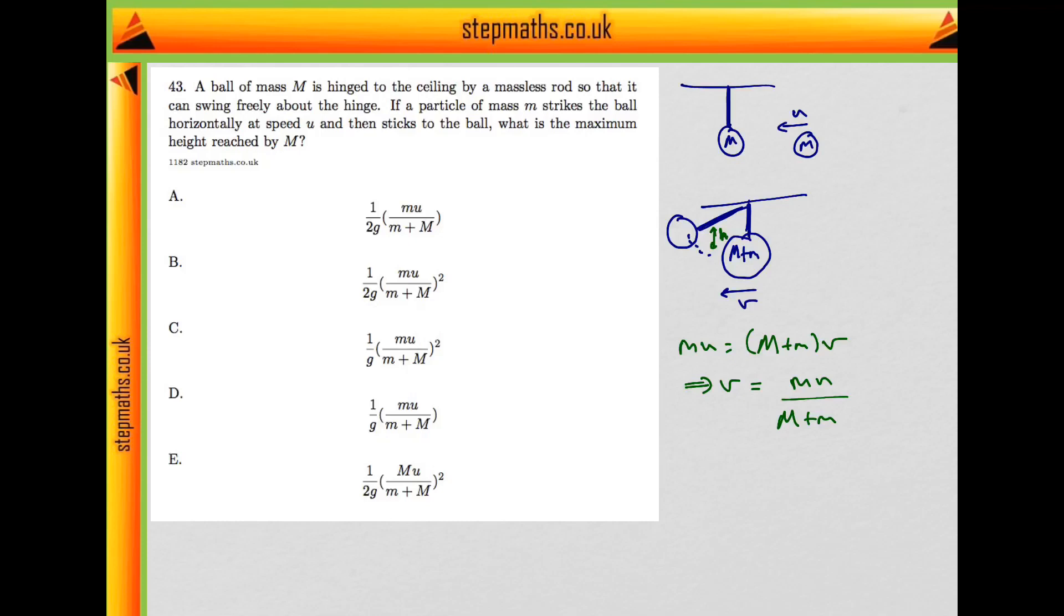Now, for it to reach the maximum height, we want to assume that all the kinetic energy it has at this point here at speed v is converted entirely into potential energy up here.